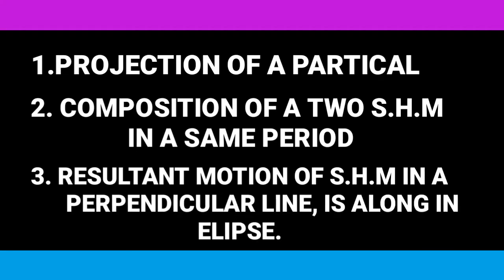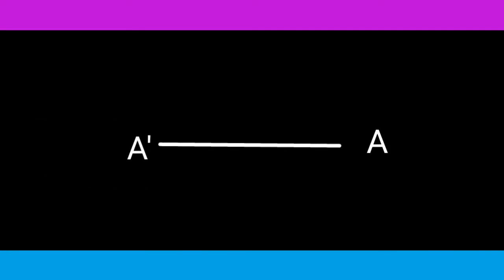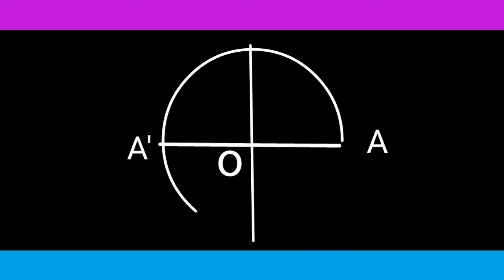In the first topic, we have to show that the motion of a particle's projection is simple harmonic. First we consider AA' as a diameter, then draw a perpendicular line via center AA'. It is denoted O, or origin. If A is a particle then O is a fixed point, and the motion of the particle is a circle.